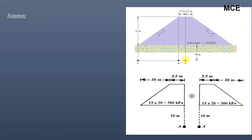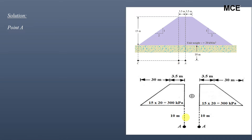We have two similar trapezoids each having a top width of 3.5 meters. The base length is 30 meters, because the height of the embankment is 15 meters and the side slope is 1:2, so the base of the triangle is 15 × 2 = 30 meters. Point A has a depth of 10 meters.